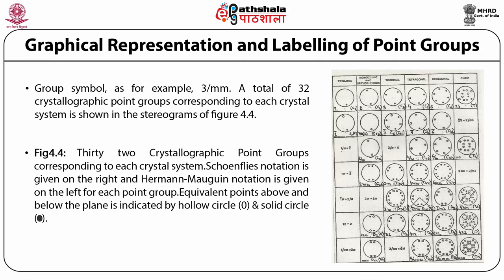The 32 crystallographic point groups corresponding to each crystal system: the Schoenflies notation is given on the right and Hermann-Mauguin notation is given on the left for each point group in Figure 4.4. The equivalent points above and below the plane are indicated by hollow circles and solid circles respectively. For example, in the triclinic system, point group 1 is represented in Schoenflies notation as C₁, and its graphical representation is given in column 1. Similarly, for monoclinic and orthorhombic, the diad is represented graphically with Schoenflies notation C₂.